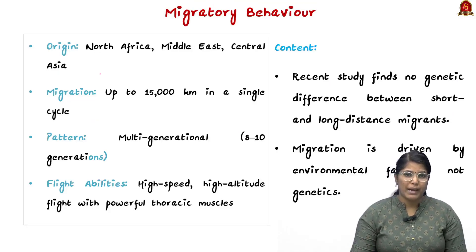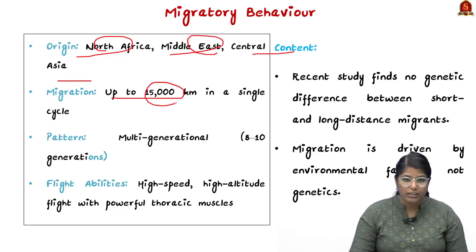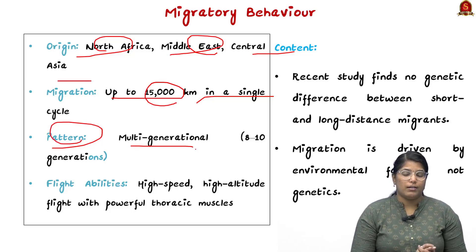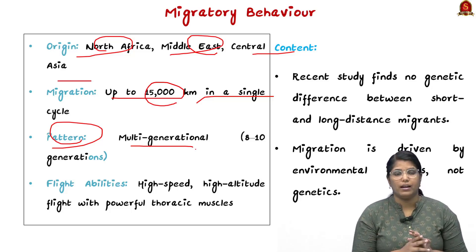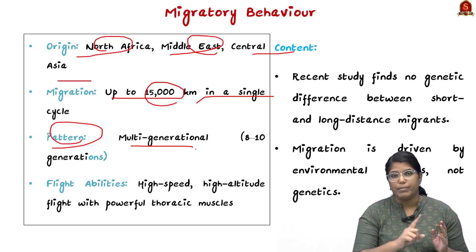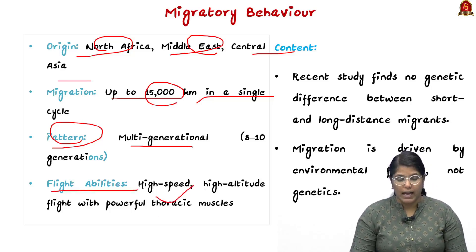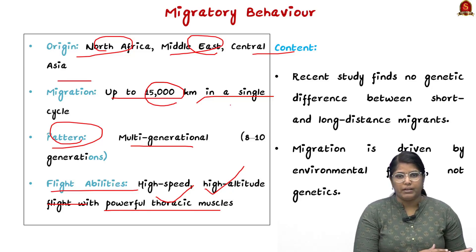Regarding migratory behavior: they originate from North Africa, the Middle East, as well as Central Asia. They migrate up to 15,000 kilometers in a single cycle. The pattern is multi-generational — they do not complete the cycle in a single generation; it takes at least eight to ten generations to complete one migratory cycle. They also have high-speed, high-altitude flight capability with powerful thoracic muscles.